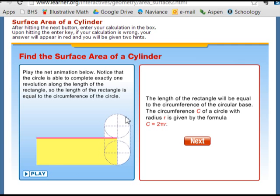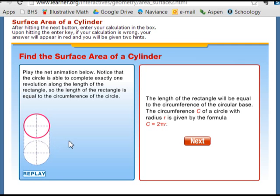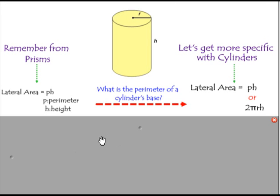So with prisms, the perimeter of the base times the height gave you the lateral area. And here, it's the same thing. The perimeter of the base just happens to be the circumference of the circle. And watch when I roll it back up, you'll see that it's just the circumference of that circle gives you the width of that rectangle, and then the height of that rectangle is just the height of the cylinder. So the formula is really the same. The lateral area is the perimeter times the height. Same thing with the cylinder. Only difference is the perimeter here is the circumference of the circle, which is 2 pi r. So another way to write this formula is 2 pi r h.